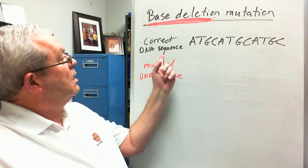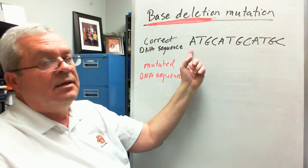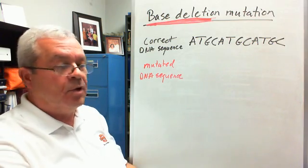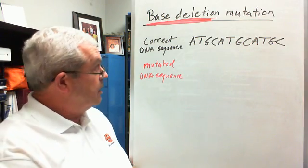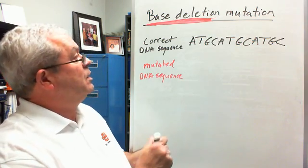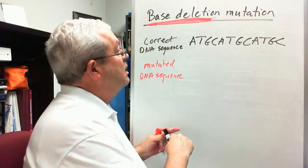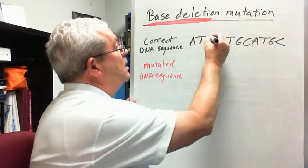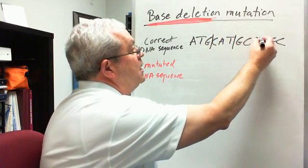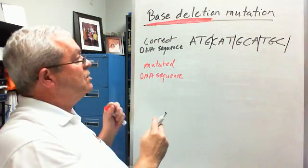What's an example? I've set up a correct DNA sequence here. Let's go ahead and highlight the codons: ATG, CAT, GCA, TGC, etc.